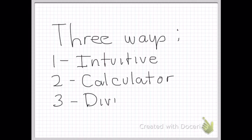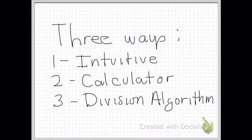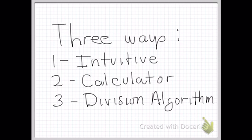There are three ways that we'll talk about. The first is the intuitive method, and that's what we just did, where we look at the numbers and guess how many times one goes into another. The second method is with a calculator, and the third method is the division algorithm.